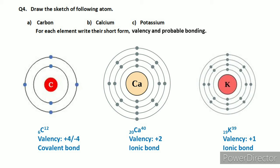Let's move towards the next sketch: calcium. Just like we drew carbon, we draw calcium. To draw calcium, you need to know calcium's atomic number and mass number, because we also need to write its shorthand form. Calcium's symbol is Ca. Its atomic number is 20, written on the bottom left side, and its mass number is 40, written on the top right side. The atomic number describes the number of protons, and the number of protons equals the number of electrons in any atom.